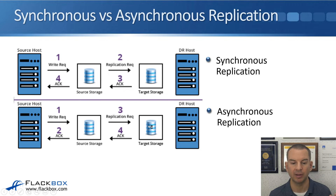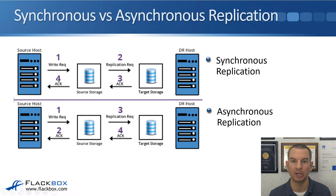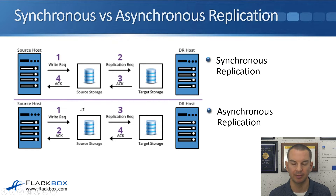The target storage then sends an acknowledgement back to the source storage system. With asynchronous replication, it breaks down into two separate operations. The write comes into the source storage and it immediately sends the acknowledgement back to the client. Later, on the schedule in a separate operation, all of the writes are written to the target storage, and the target storage sends an acknowledgement back for that.